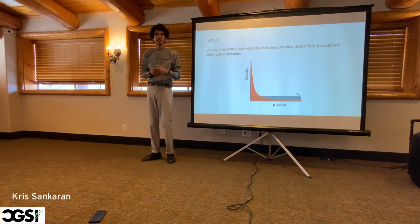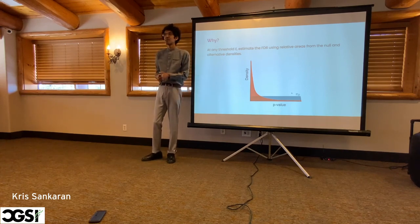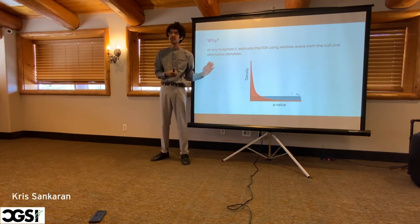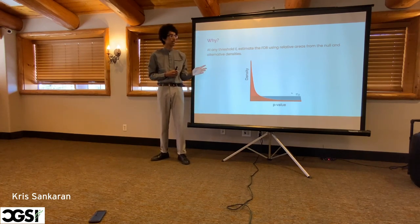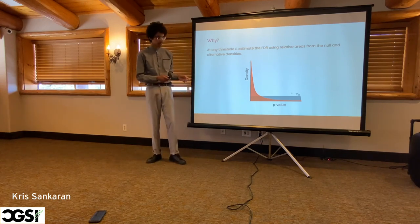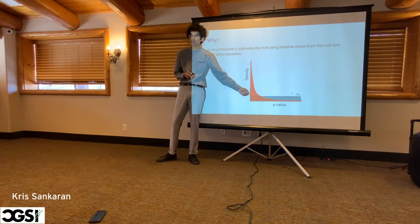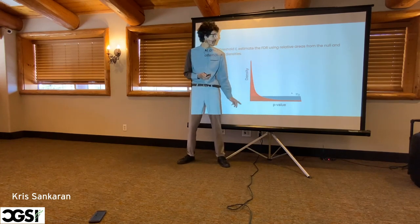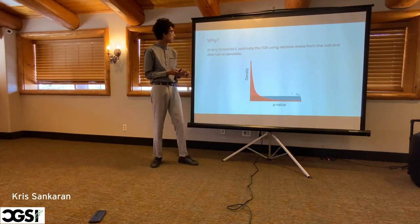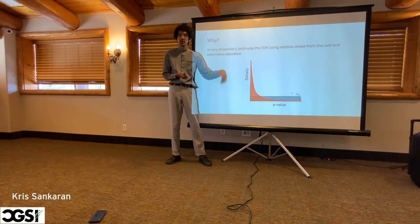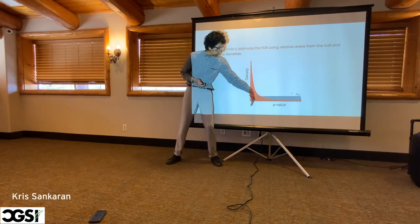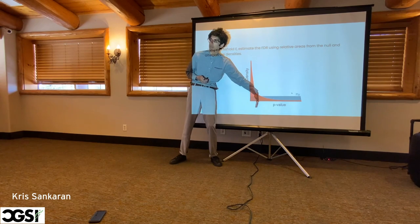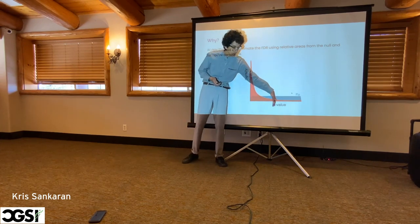The first time I saw this, it was just presented as a recipe that works. But it took me a little digging to figure out why it actually works. Here's an explanation I really enjoy — it's not exactly a proof, but it gives the intuition. Going back to the toy diagram: you have this density corresponding to the alternatives, the density corresponding to the null, and pi-zero is the height. A threshold, or a rule for rejecting hypotheses, is just setting a cutoff along the x-axis.